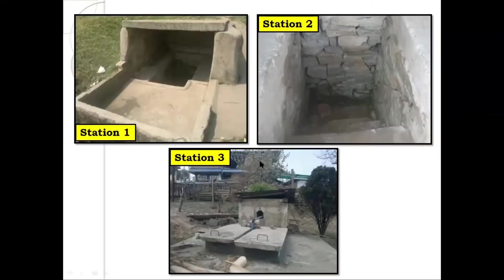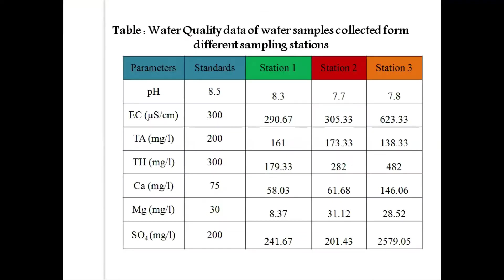After water sample collection, let us assume that the parameters studied are pH, electrical conductivity, total alkalinity, total hardness, calcium, magnesium, and sulfate. The analytical data obtained for the water quality analysis are given in this table.